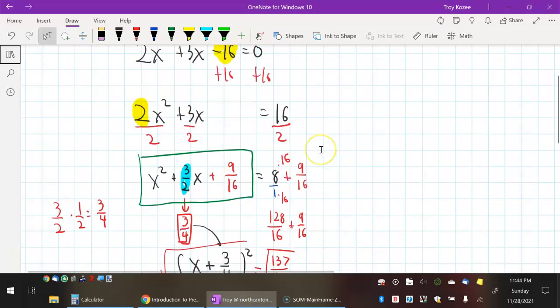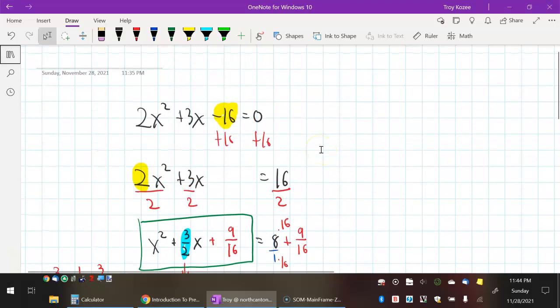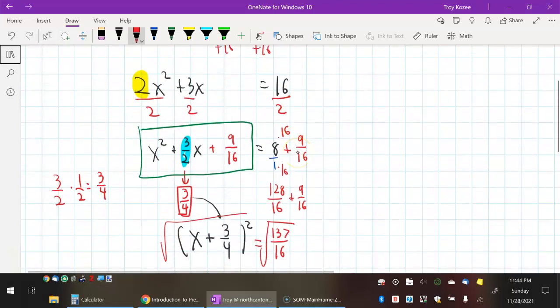So, back up here. When you complete the square, if your leading coefficient isn't 1, you need to divide it out. If you get lucky, you're not going to get fractions. If you do, it's totally workable. It's not that bad. You just have to keep your head. But half of a fraction is always double the denominator. And that half is what's going to show up in your factor.